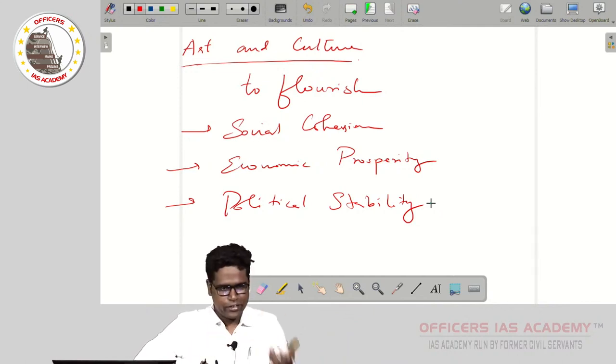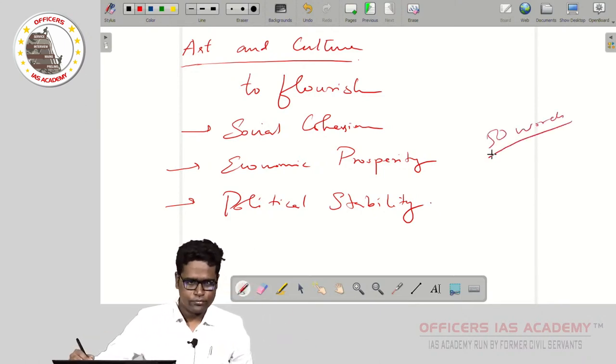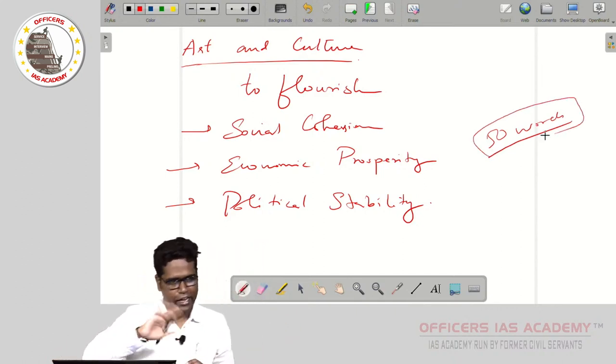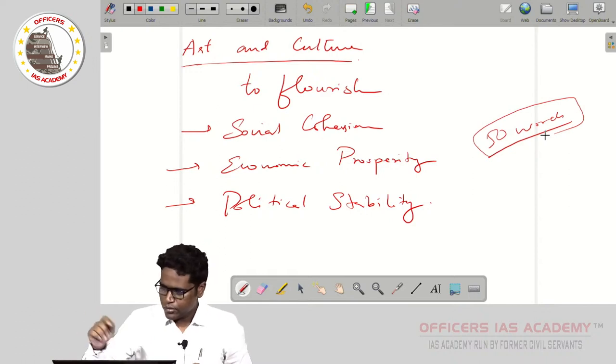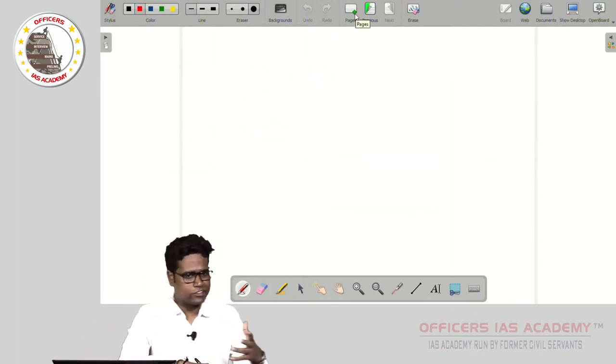So whenever there is social cohesion, you can focus on these things. You write this, and this alone will give you 50 words. Our aim is to fill 150 words, so this will be your introduction for any art and culture question. Once you write this, then you have to focus on whatever is being asked.